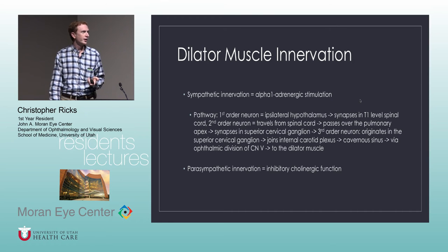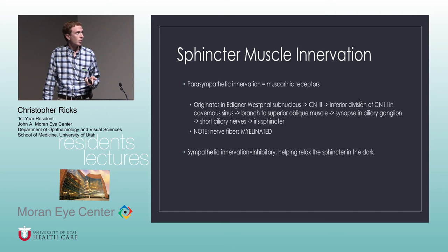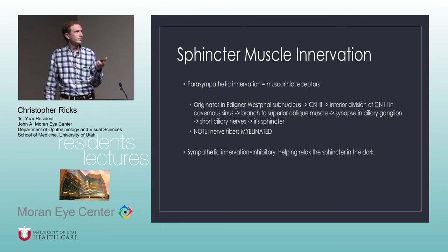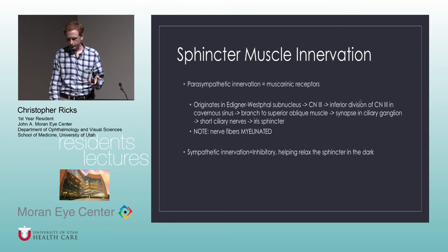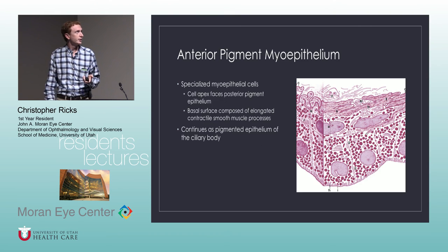There's also some parasympathetic innervation that's inhibitory. The sphincter muscle is parasympathetic, mostly with muscarinic receptors. It starts in the Edinger-Westphal nucleus, runs through cranial nerve 3, through the cavernous sinus, with branches to the superior oblique muscle, and synapses in the ciliary ganglion, then terminates via the short ciliary nerve to the iris sphincter. The sympathetic innervation there helps inhibit the sphincter muscles.